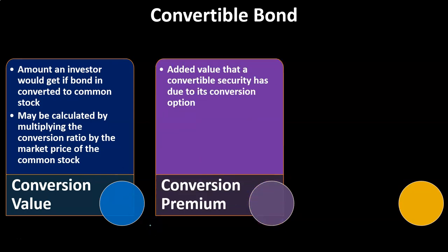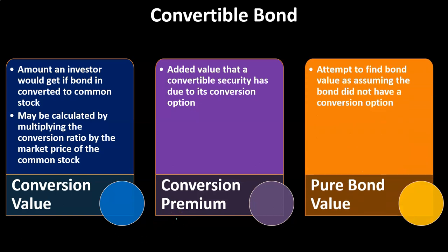The conversion premium is the added value that a convertible security has due to its conversion option. Typically, we'll think about the conversion premium by taking the conversion value and comparing it to the bond price — the price it's currently selling for — with the difference being what we might consider the premium for the option.